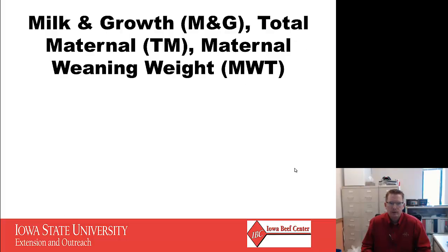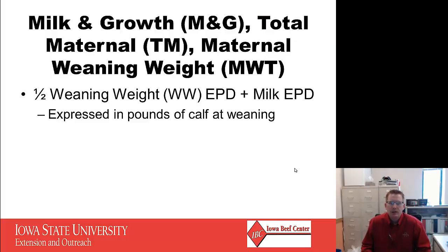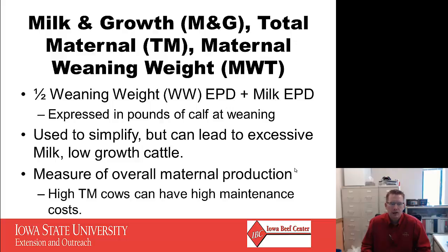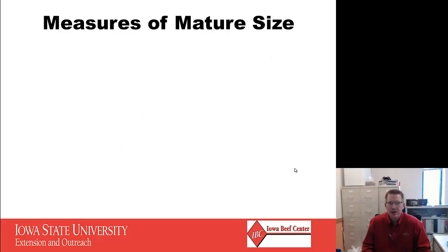Milk and growth, also called total maternal or maternal weaning weight, is calculated by taking half of the weaning weight EPD and adding milk to it. It is expressed in pounds of calf at weaning and is used to simplify the selection process. However, it can lead to excessive milk with low growth, or on the flip side, really high growth with low milk if examined too narrowly. It is a measure of overall maternal production, and some high total maternal cows can have high maintenance costs, so it needs to be used with caution.